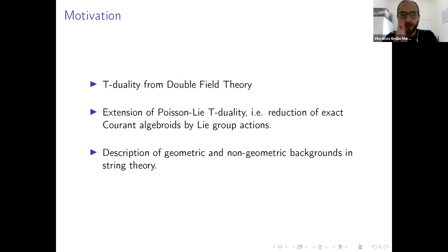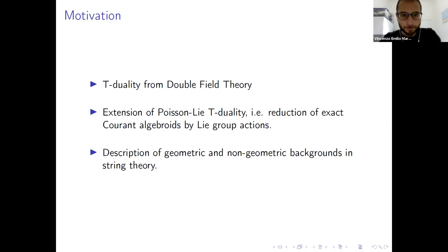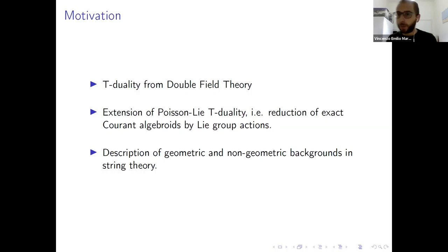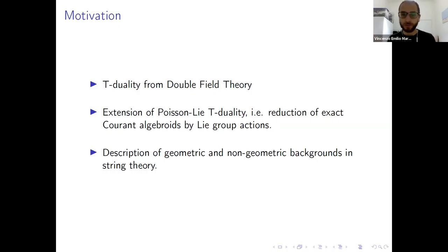This topic is mainly motivated by understanding T-duality from a double manifold perspective — having a double manifold, an even-dimensional manifold with some structure on it, and trying to understand how T-duality works in this setting. The main inspiration in our treatment is Poisson T-duality in the sense of reducing exact Courant algebroids by Lie group actions, and seeing how this works in the case of a double manifold. This should allow us to have a geometric description of geometric and non-geometric backgrounds in string theory.